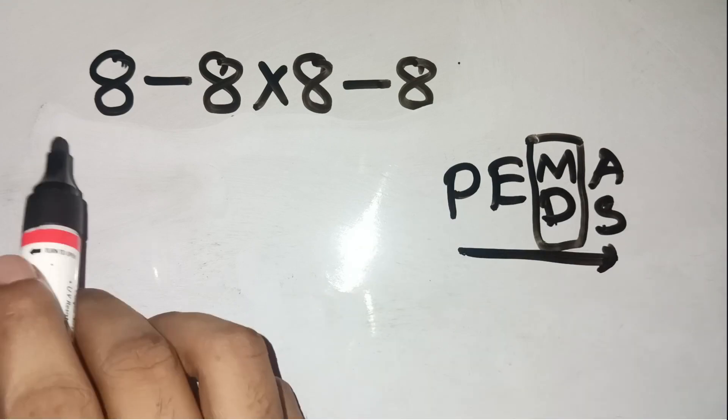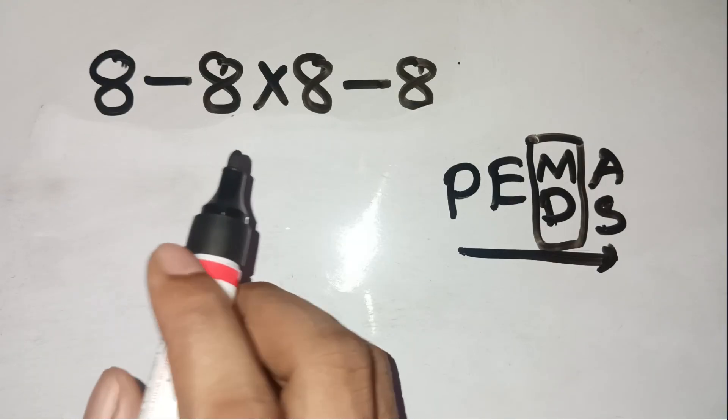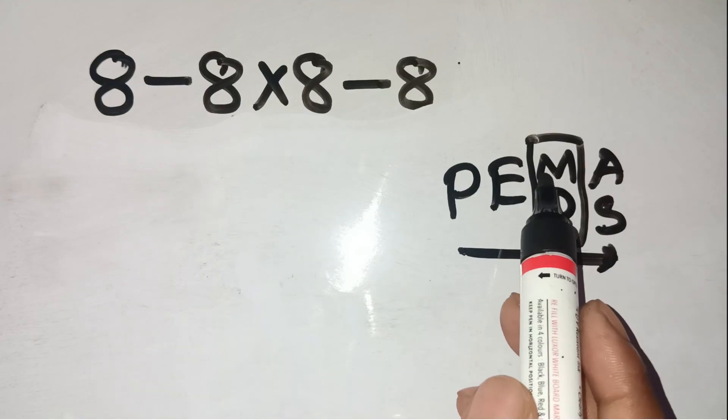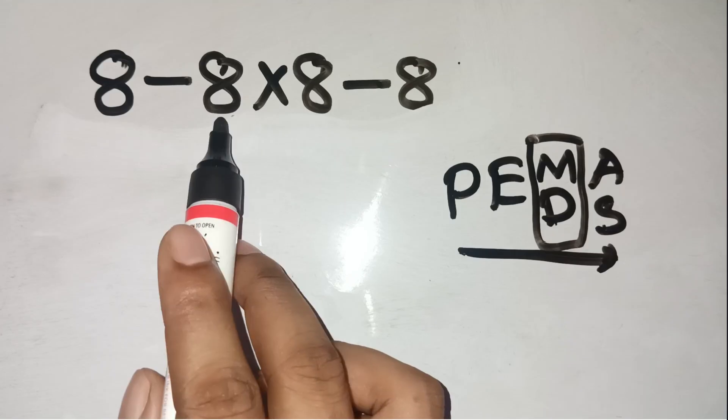So we're solving 8 minus 8 times 8 minus 8. There are no parentheses or exponents, so we move straight to multiplication and division. First, look at that 8 times 8 in the middle.